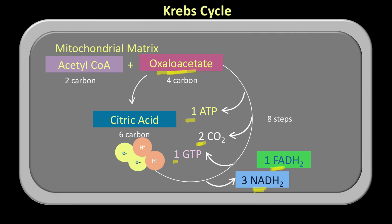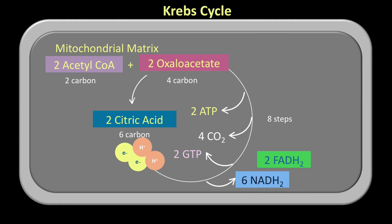Since we started with two molecules of acetyl-CoA after the link reaction, and each combined with a molecule of oxaloacetate, for two molecules of acetyl-CoA we get six molecules of NADH2, two molecules of FADH2, four molecules of carbon dioxide, two molecules of ATP, and two molecules of GTP.